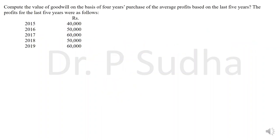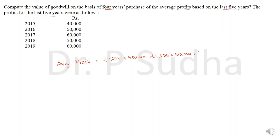This is the first question. We have to calculate goodwill on the basis of 4 years' purchase of the average profit based on the last 5 years. The profits of the last 5 years are given. To calculate under simple average, the first step is to calculate average profit.